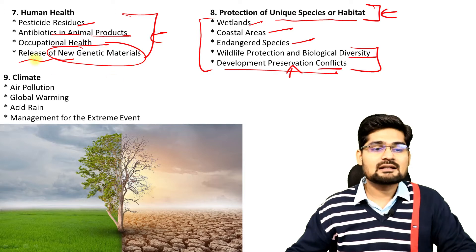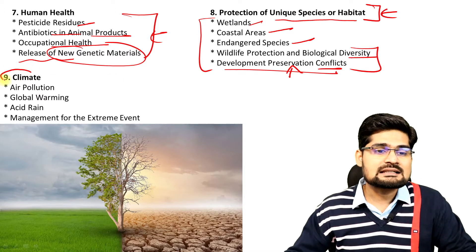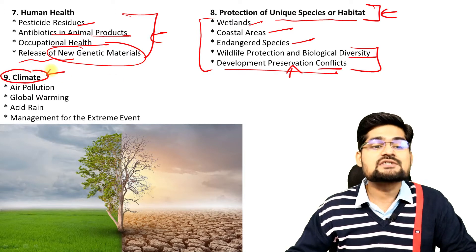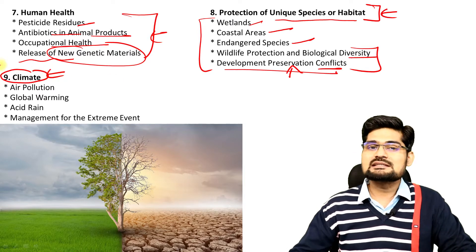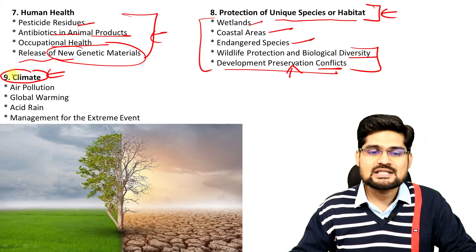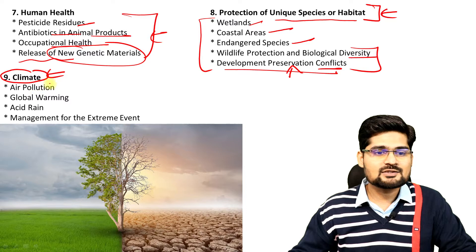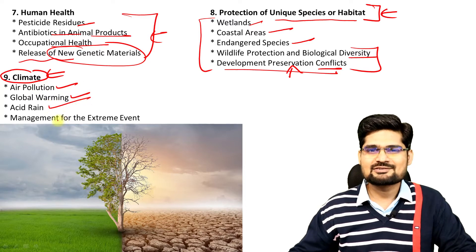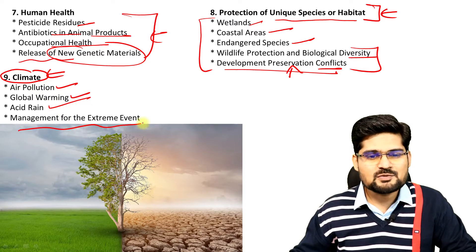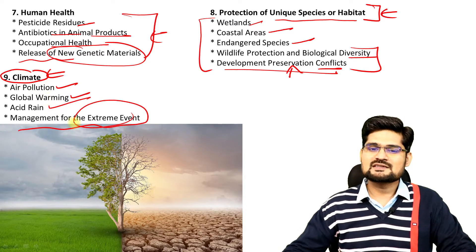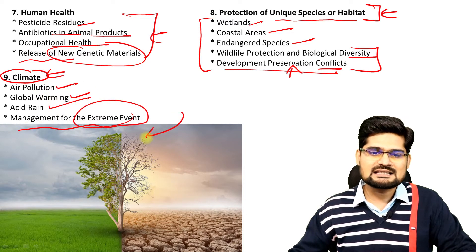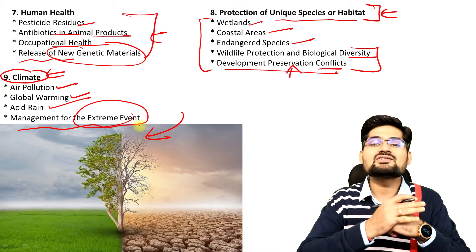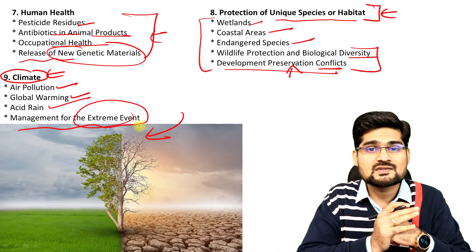The last and greatest one we are looking at is global climate change — air pollution, global warming, acid rain, and management of extreme events. If you look into these kinds of representations that we make through images, the world is changing fast.